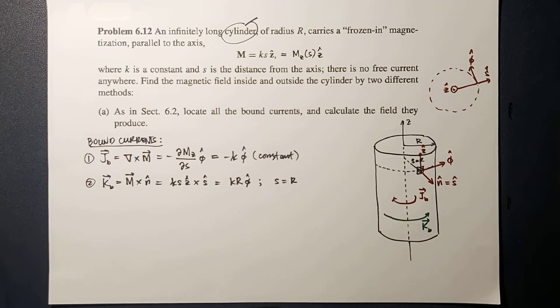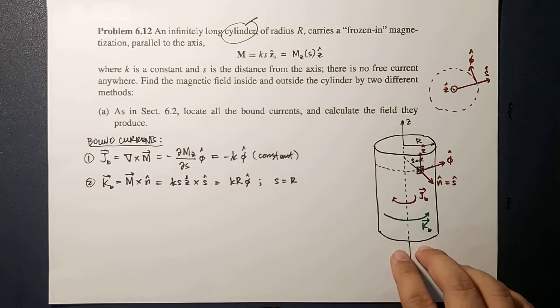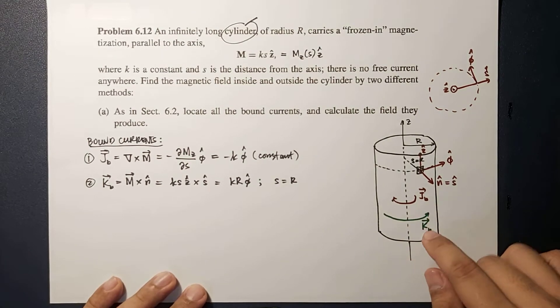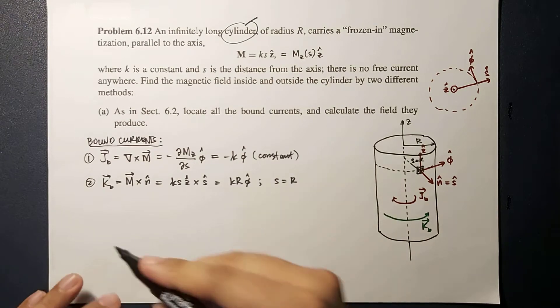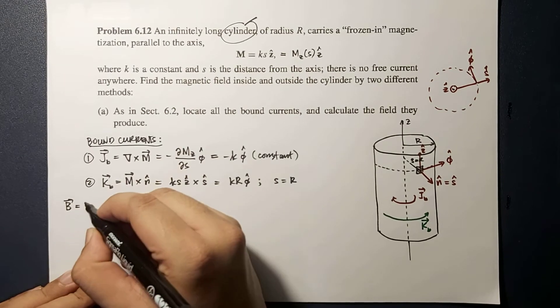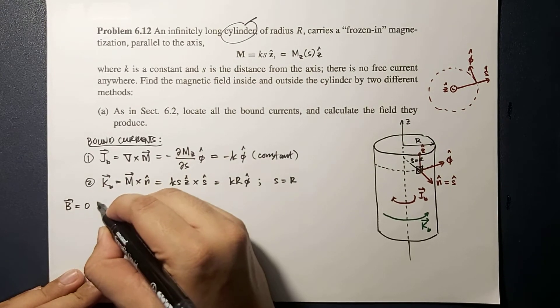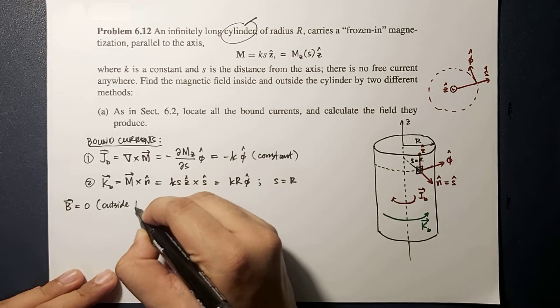Because of this, the resulting directions of your bound currents J and K, we can now consider this cylinder to be a superposition of two solenoids, wherein your two solenoids have currents JB and KB and they're directed in opposite directions.